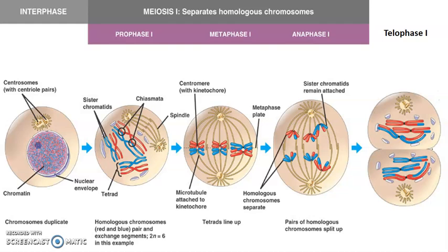Hello everyone, welcome back to our second lecture video on meiosis. In this video we're going to discuss meiosis II, the second division stage in which we're trying to get to the point where we produce both sperm and/or egg cells. So last where we left off, we had produced two cells right here where my laser pointer is. These two cells here are going to be haploid.